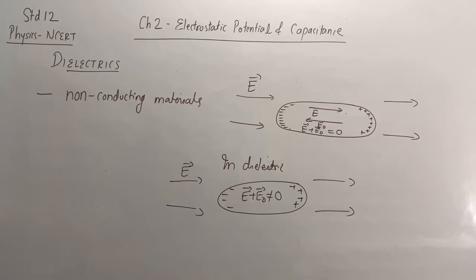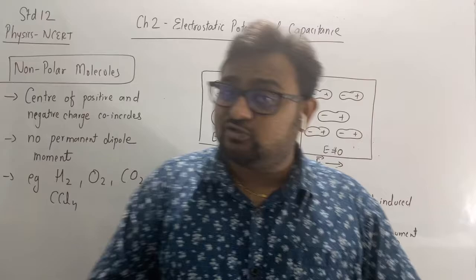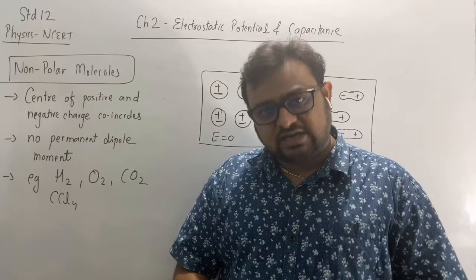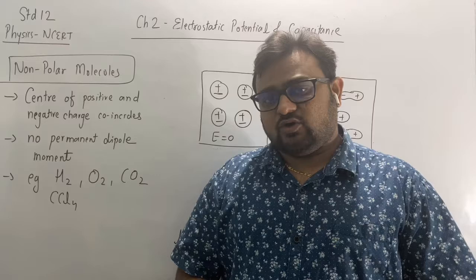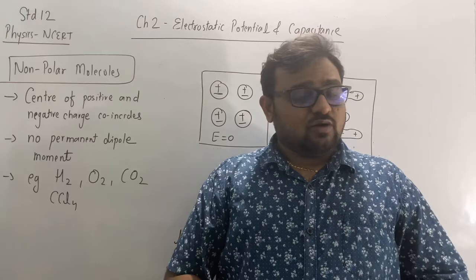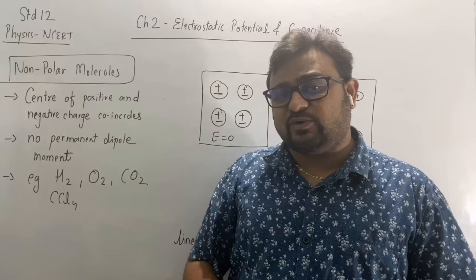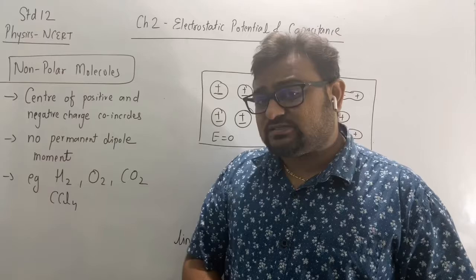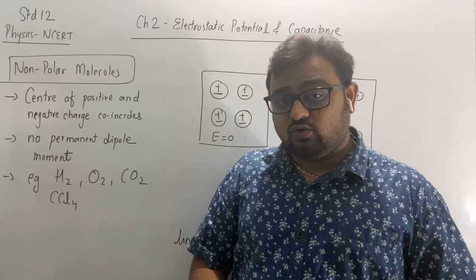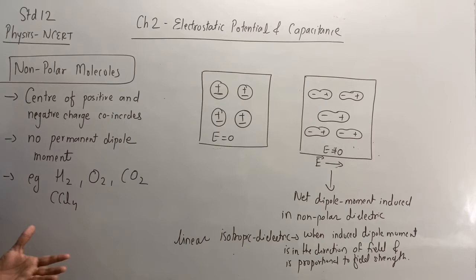Now, the center of positive and negative charge — in some molecules these coincide, meaning both are at the same place. That type of molecule is called non-polar, and it will not have a permanent dipole moment. Recall that dipole moment P = q·2a, where 2a is the distance between the positive and negative charge. Since both centers are at the same place, non-polar molecules do not possess a permanent dipole moment. Examples of non-polar molecules: H₂, O₂, CO₂, CCl₄.